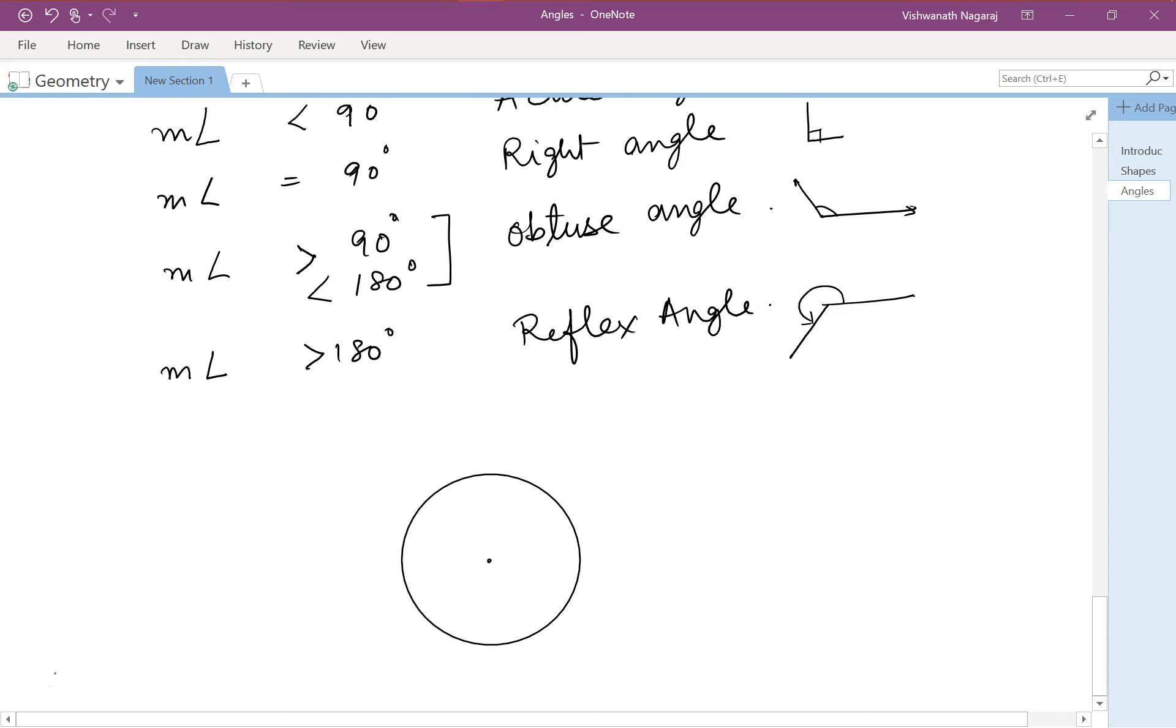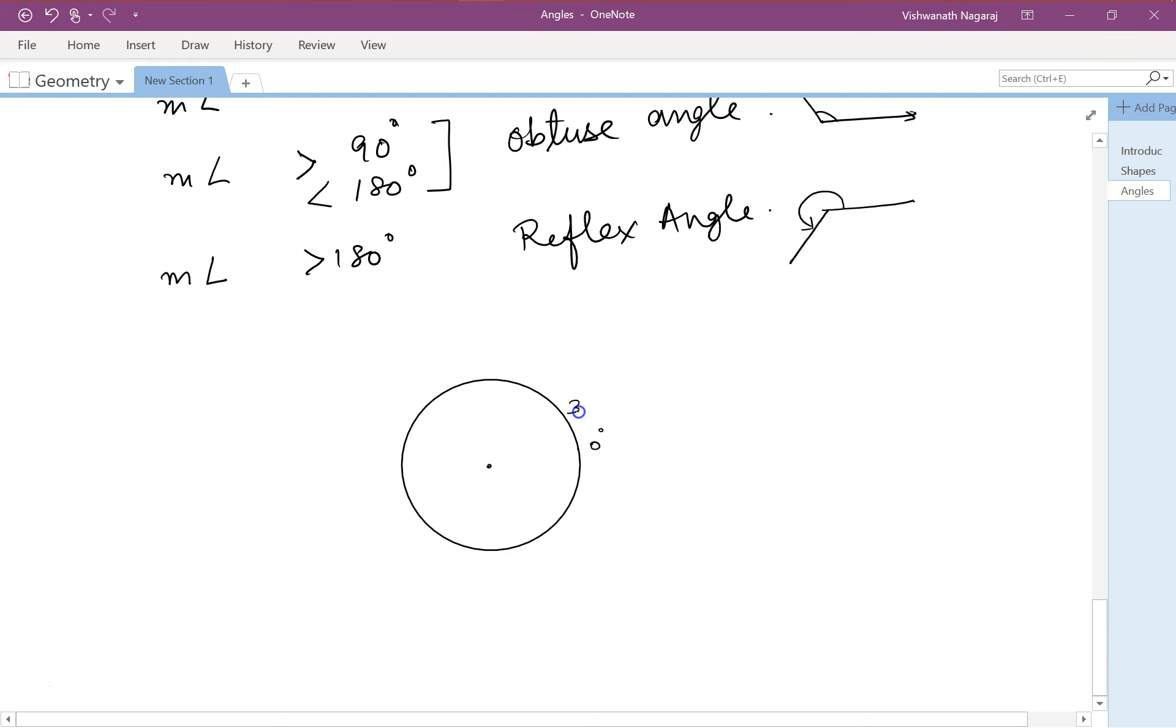Let's look at some angles which are very important: 0 degree, 30 degree, 45 degree, 60 degree, 90 degree, 120 degree, 135 degree, 150 degree, 180 degree. So 180 degrees would be a straight line, 90 degrees would be this. Then 210 degree, 225 degree, 240 degree, 270 degree, then 300 degree, 315 degree, 330 degree, and we're back to the starting point with 360 degrees.